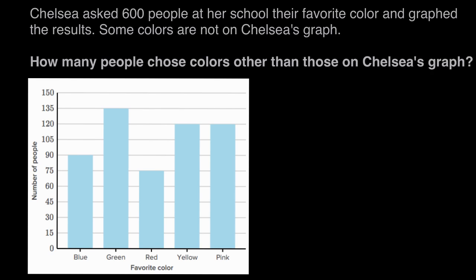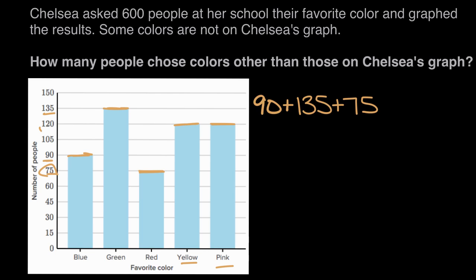Starting with the first bar: blue lines up to 90, so 90 people picked blue. Next, green lines up to 135 — 135 people picked green. Moving over to red, that bar lines up to 75, so 75 more picked red. Yellow and pink bars are the same height, and we can see that was 120, so 120 picked yellow and another 120 picked pink.